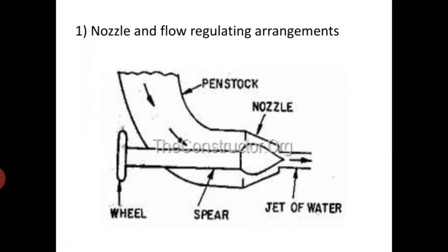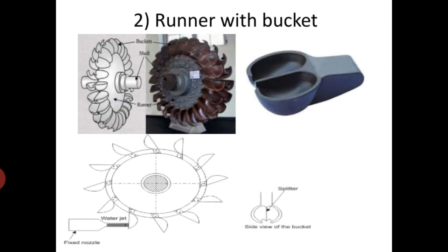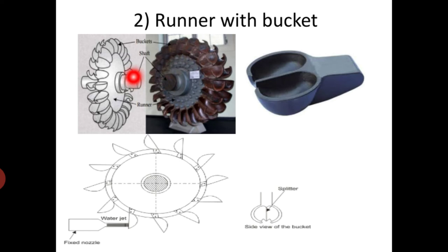The next component is the runner with buckets. The runner is the rotating part of the turbine. On the periphery of the runner, buckets are fixed at equidistant positions. This runner is coupled with the shaft.